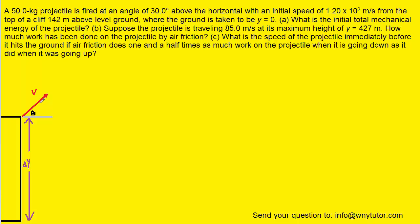The question in part A wants us to determine the initial total mechanical energy of the projectile. We want to identify the types of energy that are present initially at the moment of launch. The projectile is moving because it's been launched with a speed of 120 meters per second, and because it's moving, it's going to have some kinetic energy.